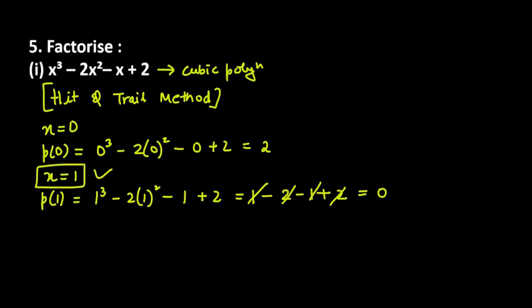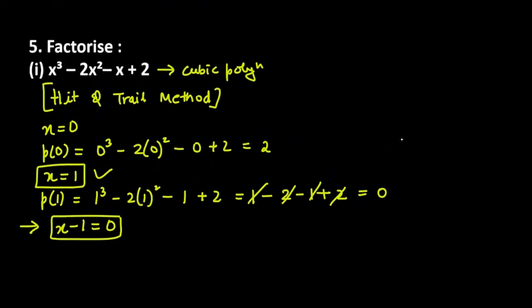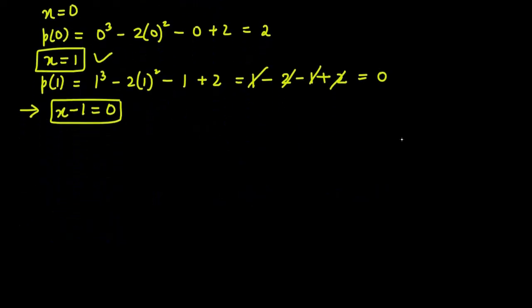Since x = 1 is a factor, we can write x minus 1 = 0, meaning x minus 1 is a factor of the polynomial. Now what we will do is divide the polynomial by this factor x minus 1, so that we can get the other 2 factors. So x cube minus 2x square minus x plus 2 divided by x minus 1.